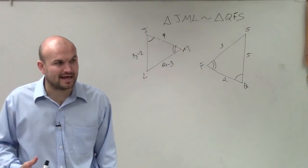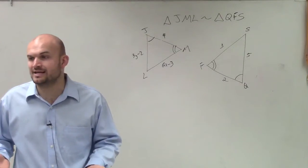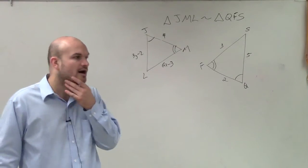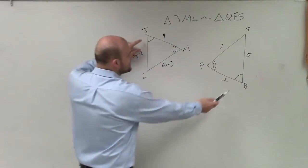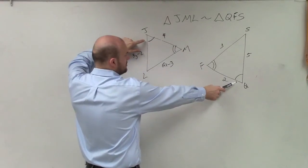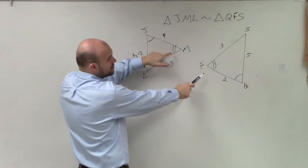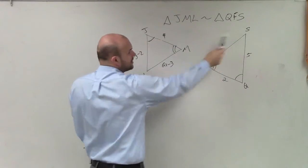Now, what I would like to do is go ahead and write in some proportions. We know that the angles, obviously you guys can see that Q and J are congruent, right? Obviously, F and M are congruent. And then S and L are congruent.